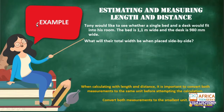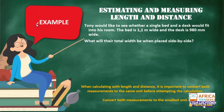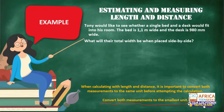We can already see that in this question they've used two different units of length and distance. A reminder you always have to remember: when calculating with length and distance, it's important to convert both measurements to the same unit before attempting the calculation. Convert both measurements to the smallest unit. What is the smallest unit we are using over here? Megan said millimeters — the smallest unit is millimeters.